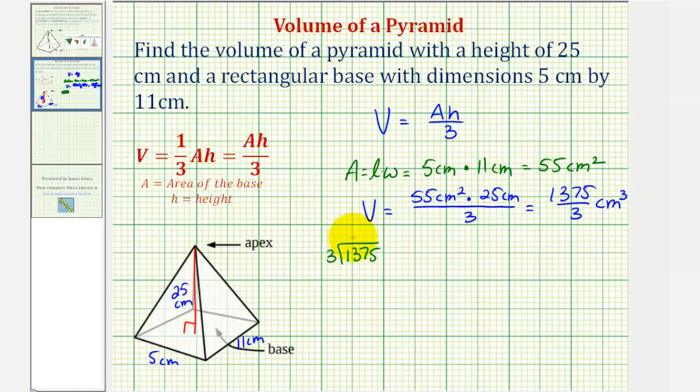There are 4 threes in 13. 4 times 3 is 12, and we subtract. This difference is 1. Bring down the 7. There are 5 threes in 17. 5 times 3 is 15. Subtract. This would be 2.